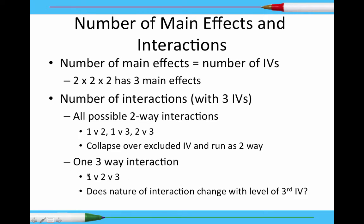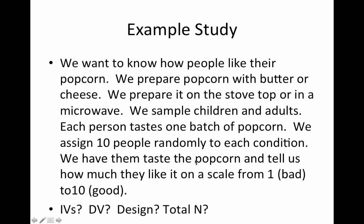Here's an example study showing what a three-way interaction looks like. We want to know how people like their popcorn. We prepare popcorn with butter or with cheese, on the stovetop or in a microwave, and we sample children and adults. Each person in our study will taste one batch of popcorn. We assign ten people randomly to each condition and have them rate how much they like it on a scale from one (yuck) to ten (it's great).